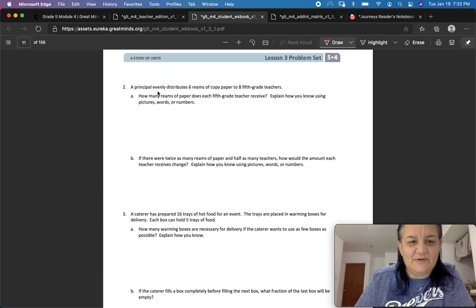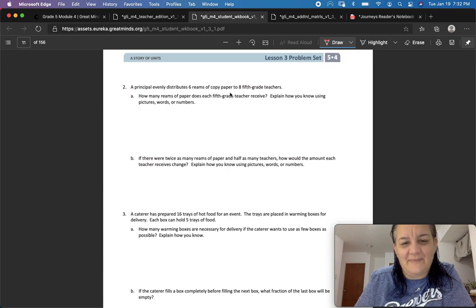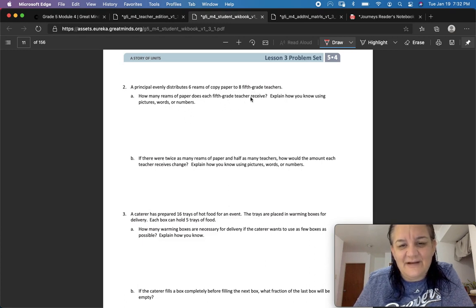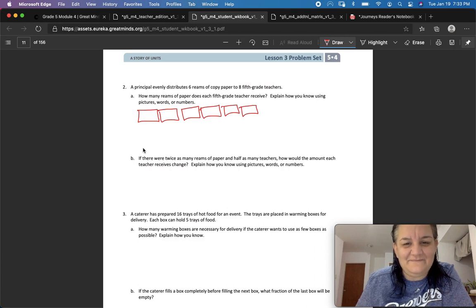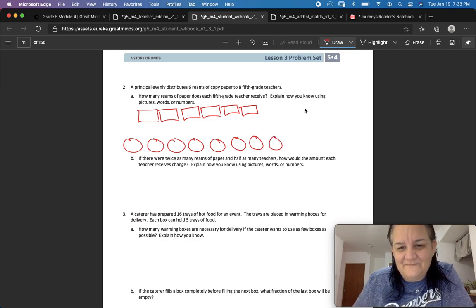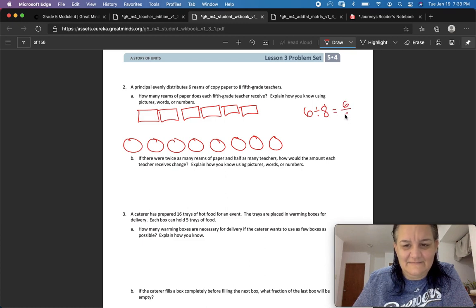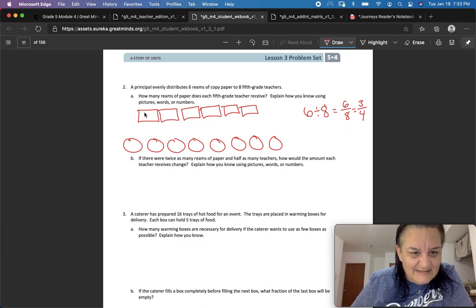Number two. Now we're getting into some story problems. A principal evenly distributed six reams of copy paper to eight fifth graders. How many reams of paper does each fifth grader receive? Explain how you know using pictures, words, or numbers. So we're going to draw pictures first. We have six reams of copy paper. Three, four, five, six, and we have eight fifth graders. So one, two, three, four, five, six, seven, eight fifth graders. So we've got six divided by eight.